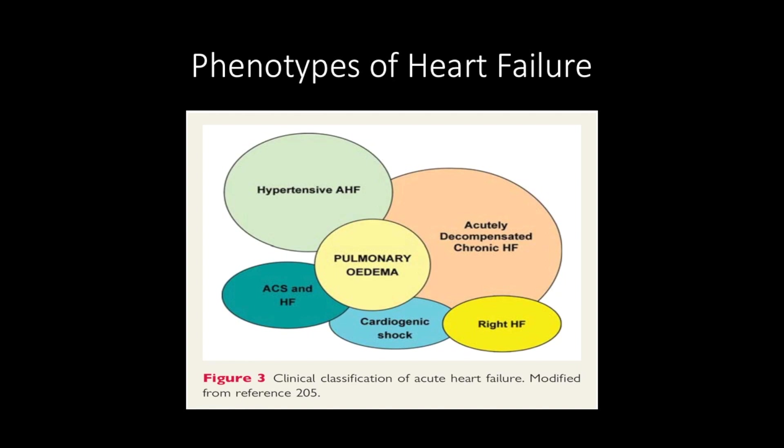The diagram below shows the phenotypes that can be seen with acute heart failure, which can often go unrecognized. Some of the phenotypes we will discuss during this module include pulmonary edema and right heart failure, as well as other more specific phenotypes not shown in this diagram but will be discussed later.